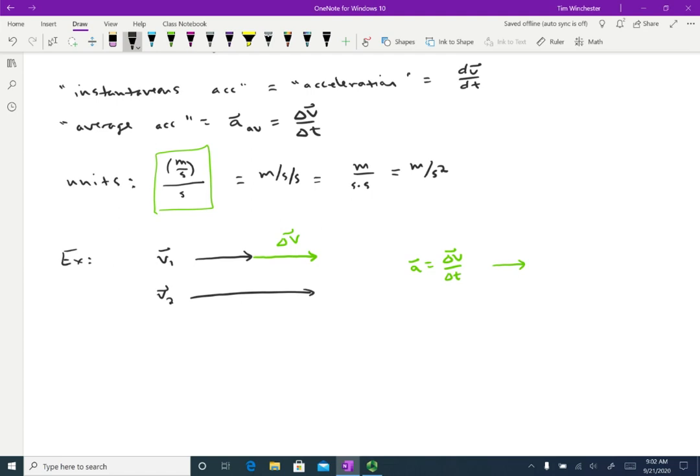So we have an object that's moving to the right with some velocity, and then later it's moving to the right with a larger velocity. So what that means in terms of words is that the object is speeding up. And when the object is moving to the right and it's speeding up, we found that it has an acceleration to the right.